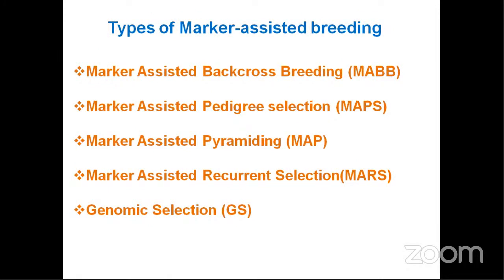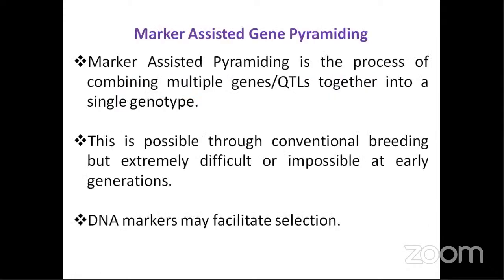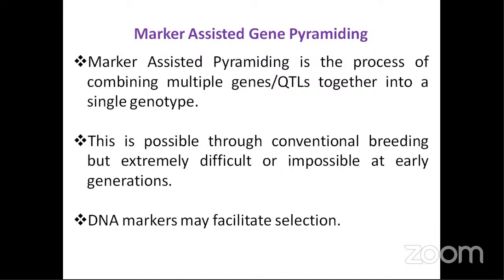Using these markers, many breeding methods have been developed: marker-assisted backcross breeding, marker-assisted pedigree selection, marker-assisted pyramiding, marker-assisted recurrent selection, and genomic selection. The third question is: what is gene pyramiding? Gene pyramiding is a process of combining multiple genes or QTLs into a single genotype or variety. This is theoretically possible through conventional breeding but is extremely difficult — you cannot distinguish plants at early generations based on phenotype alone. Using molecular markers, however, we can clearly pinpoint different allele types.